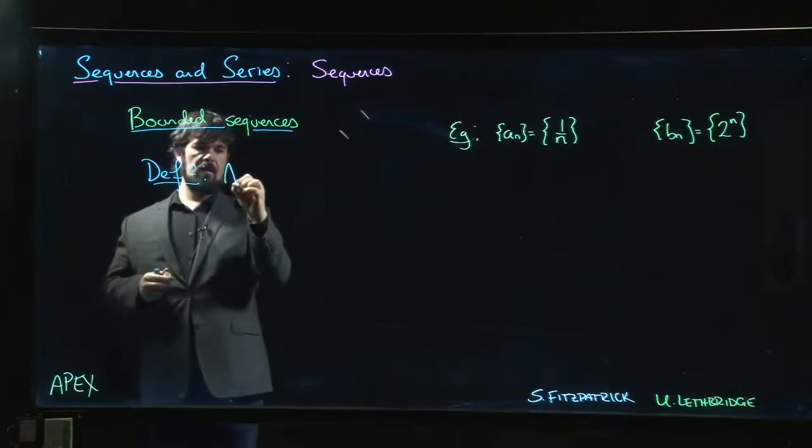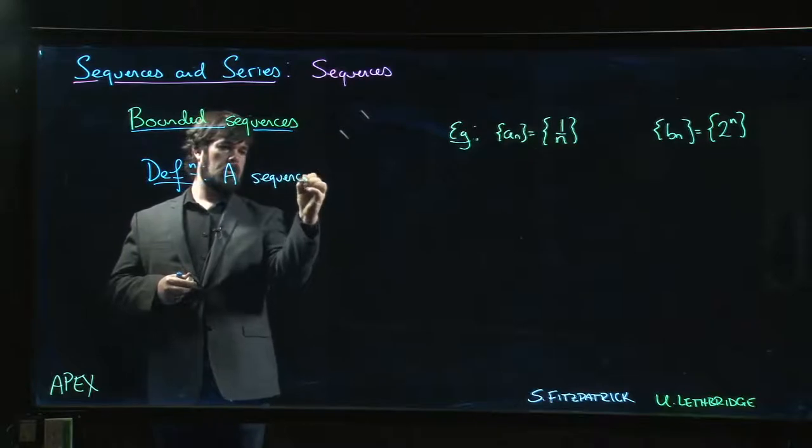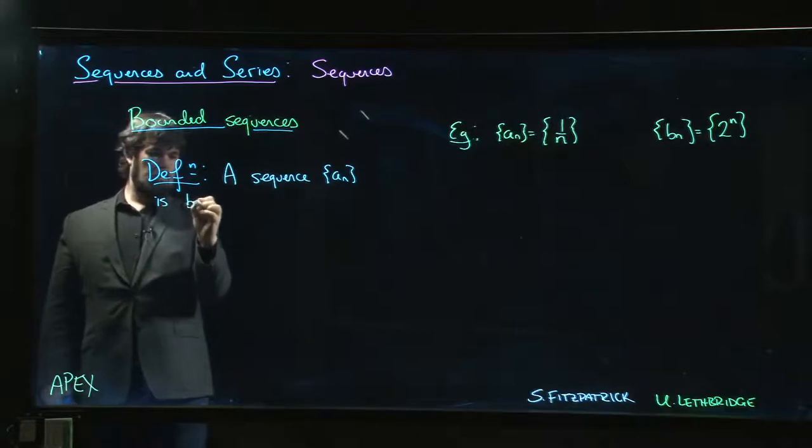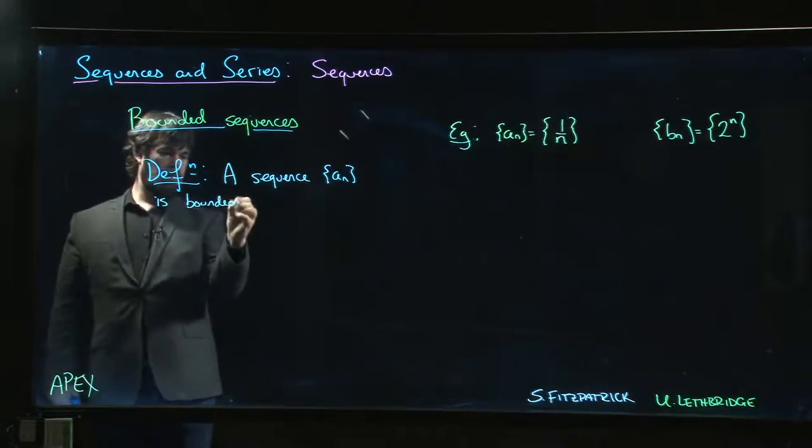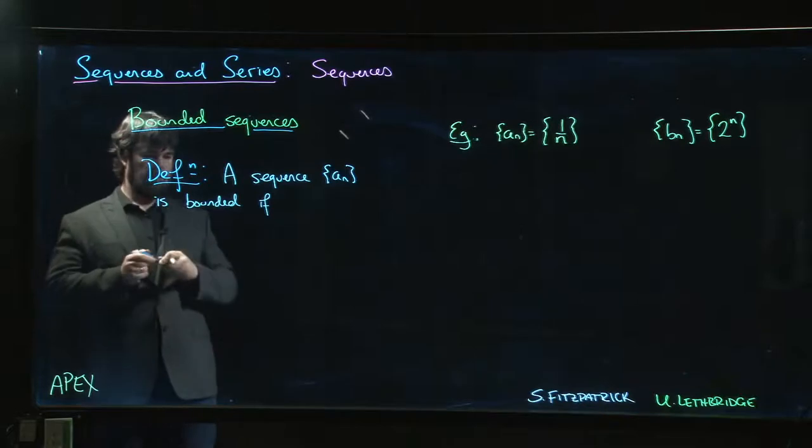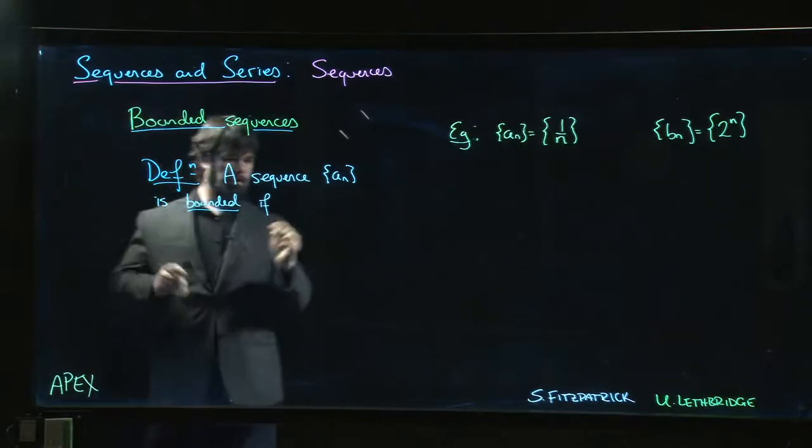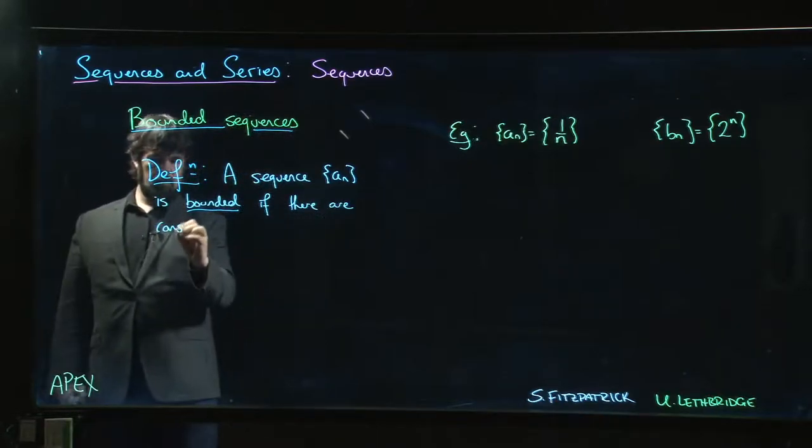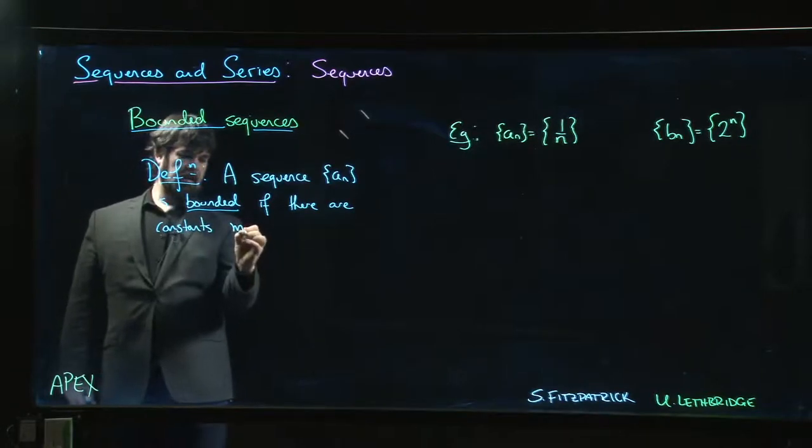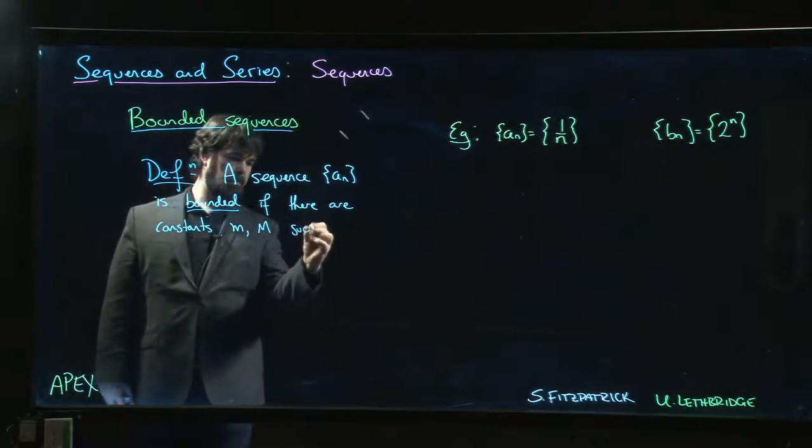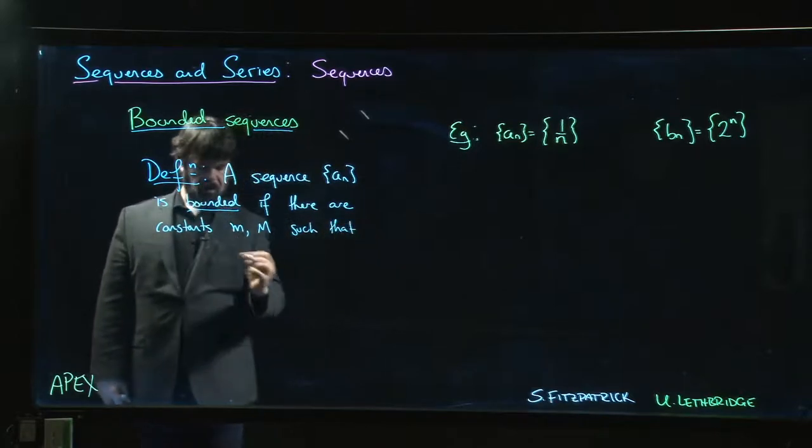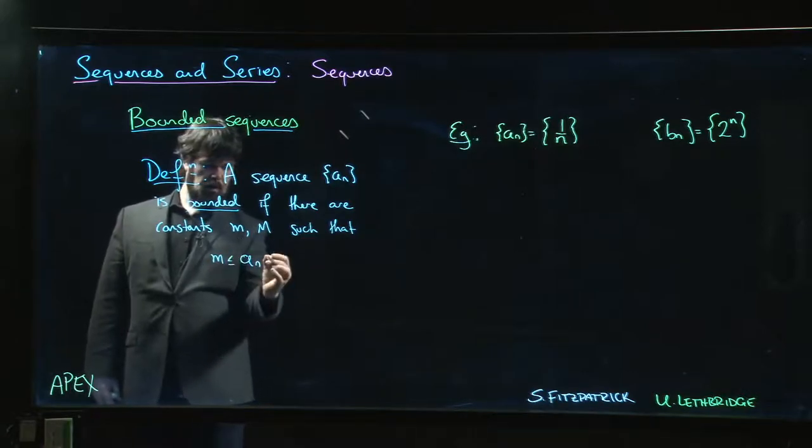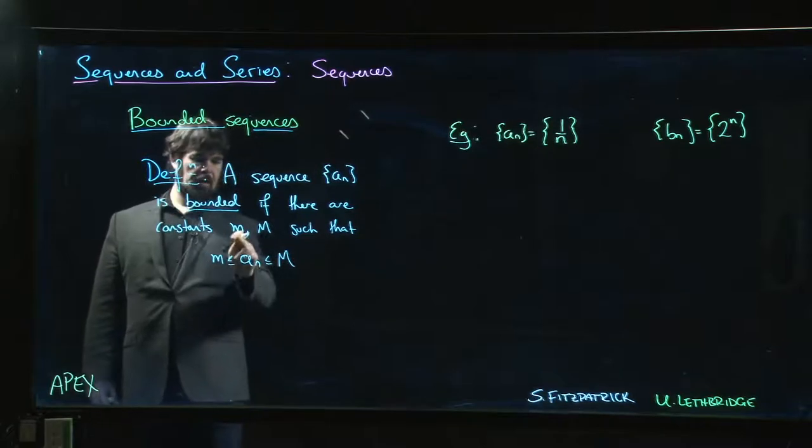So we'll have a sequence, let's say an, and we'll say that it's bounded. So it's bounded if there are constants, let's say little m and big M, such that an, each term in the sequence an, is always between little m and big M.